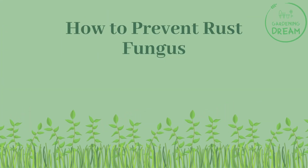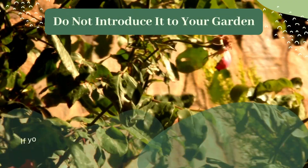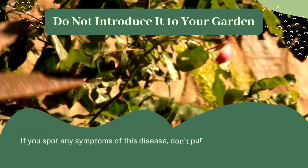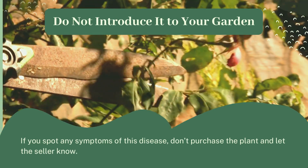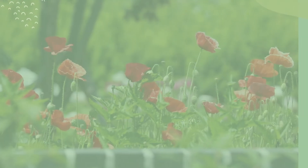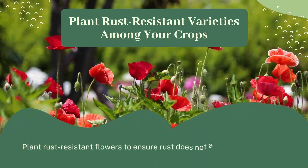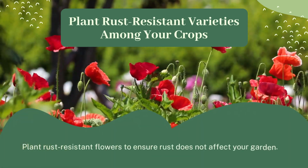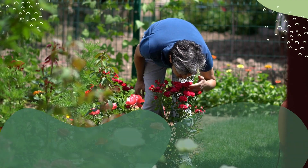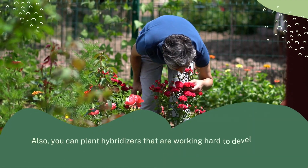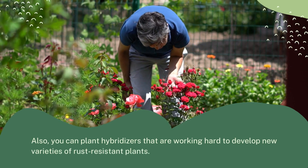How to prevent rust fungus: Do not introduce it to your garden. If you spot any symptoms of this disease, don't purchase the plant and let the seller know. Plant rust resistant varieties among your crops. Plant rust resistant flowers to ensure rust does not affect your garden. Also, you can plant hybridizers that are working hard to develop new varieties of rust resistant plants.